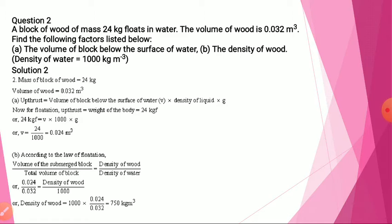Upthrust equals volume of block below the surface of water multiplied by density multiplied by g. We also know that upthrust equals the weight of the body. So we will get here 24 kgf. For flotation, upthrust should equal weight of the body; hence in this case upthrust should equal 24 kgf. By using this in the upthrust formula, we can find the volume of block below the surface of water.